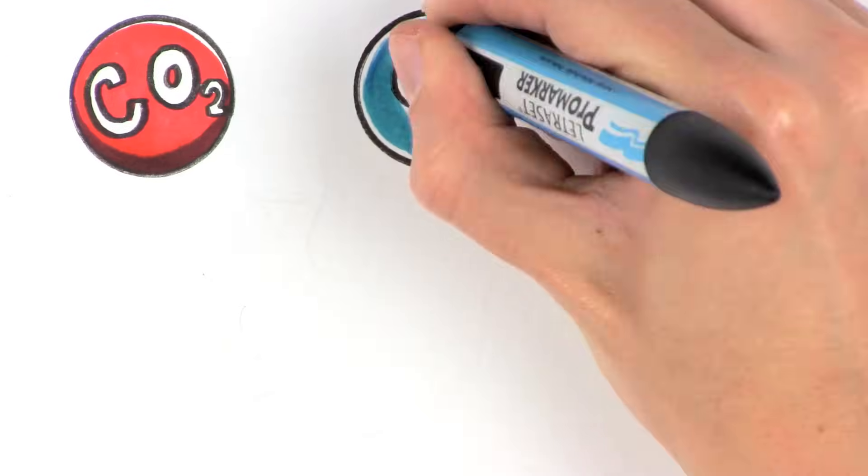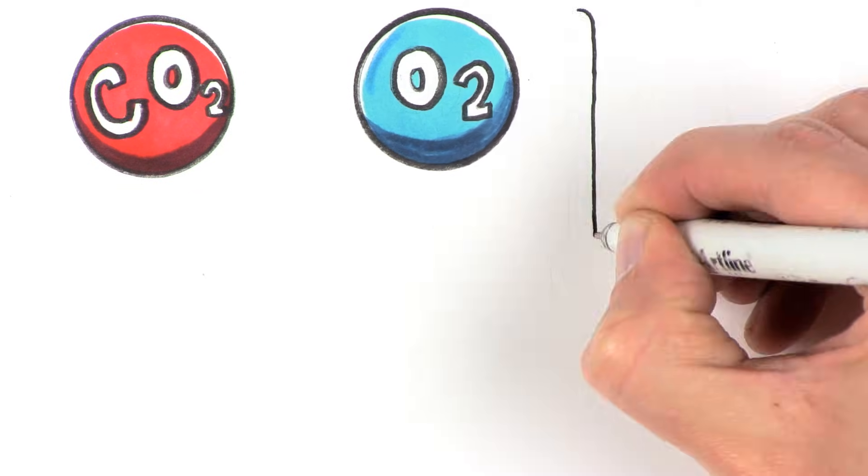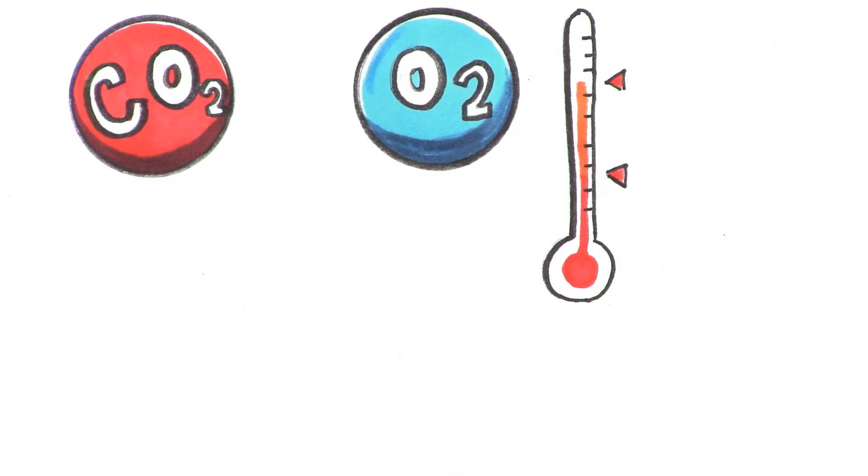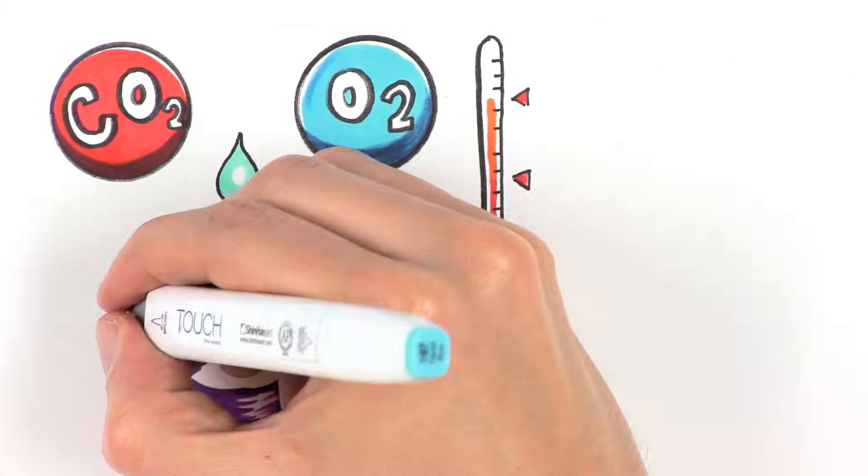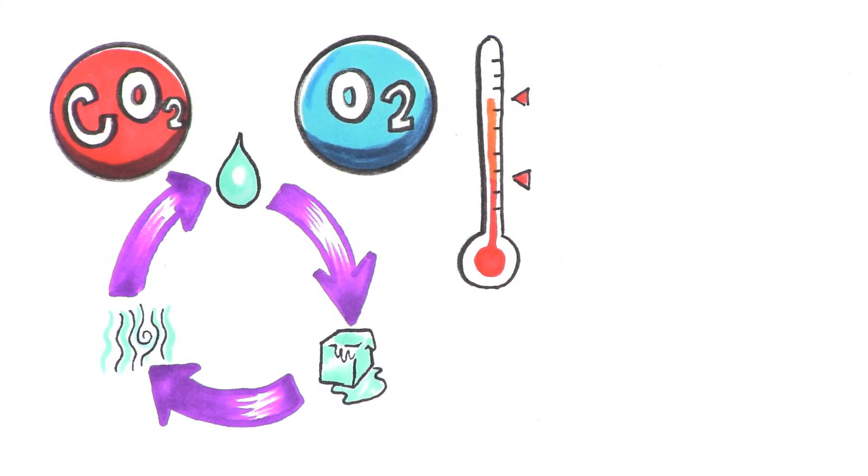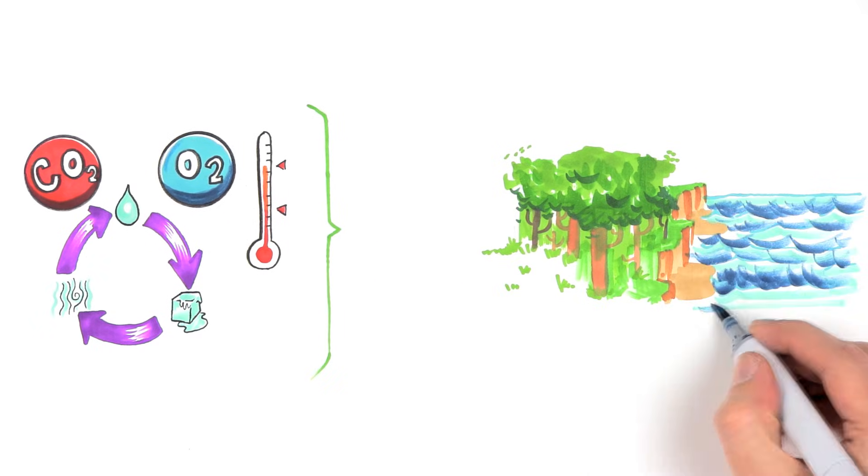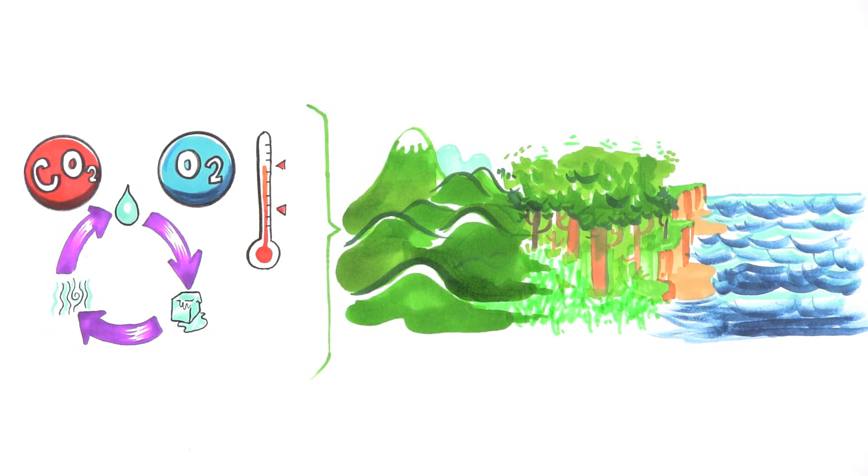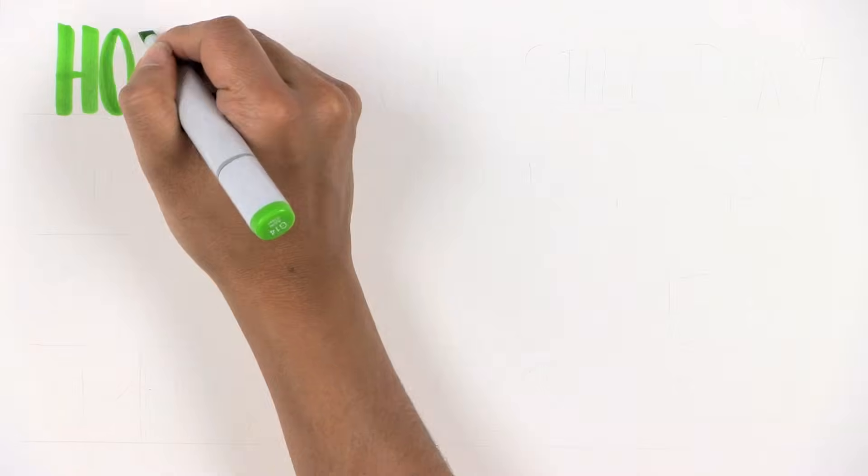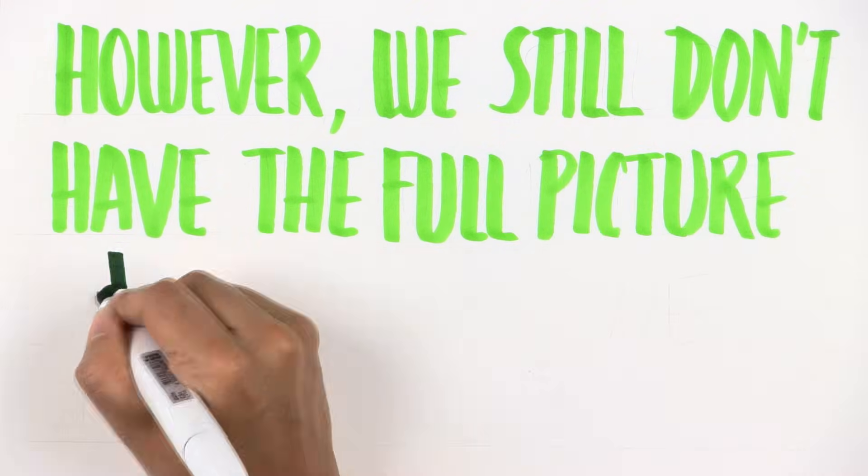In short, regulating the amount of oxygen and carbon dioxide, keeping temperature within certain limits, and participating in the water cycle by creating winds and keeping water in the ground, are some of the functions that the Amazon performs in tandem with the Atlantic Ocean and the Andes Mountains. However, we still don't have the full picture.